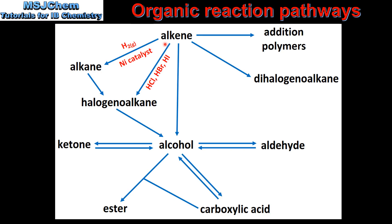Next we have the reaction of an alkene with a hydrogen halide to form a halogeanoalkane. Alkenes also react with halogens to form dihalogeanoalkanes.